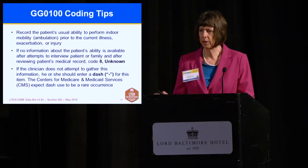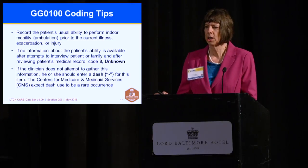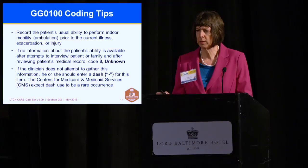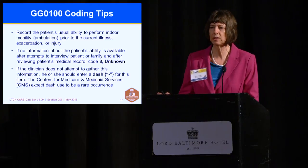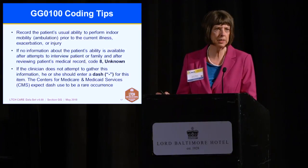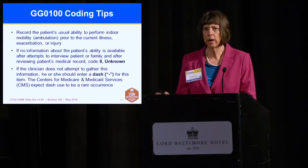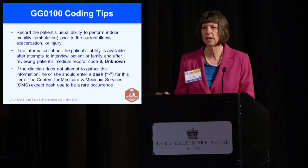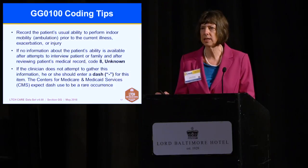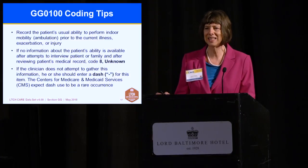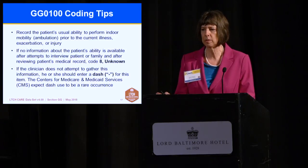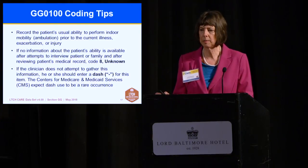For coding tips, record the patient's usual ability to perform indoor mobility and ambulation prior to the current illness, exacerbation, or injury. If no information is available after attempting to inquire through the patient, family, and records, use Code 8: unknown. If no one has attempted to gather this information at all, a dash would be used — though CMS expects dash use to be a rare occurrence.